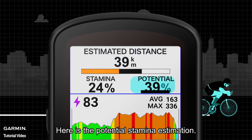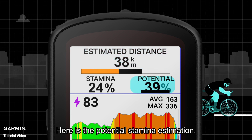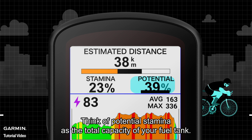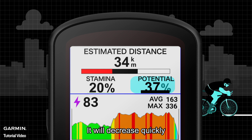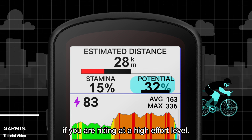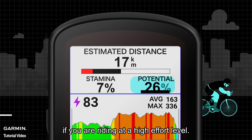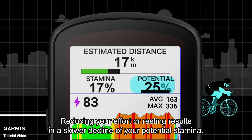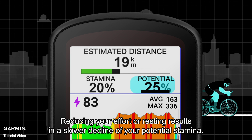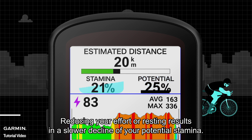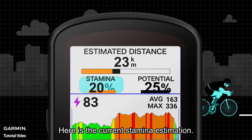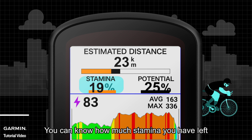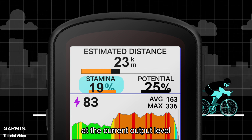Here is the potential stamina estimation. Think of potential stamina as the total capacity of your fuel tank — it will decrease quickly if you are riding at a high effort level, while reducing your effort or resting results in a slower decline. Here is the current stamina estimation, which shows how much stamina you have left at the current output level.